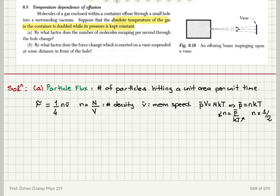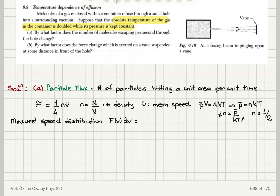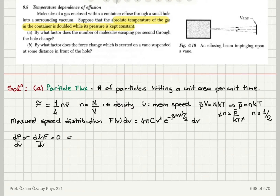On the other hand, we need to look at what happens to v̄. In the Maxwell speed distribution, there are three important speeds. The distribution f(v)dv gives the number of molecules with speeds in the range v to v+dv per unit volume, and has the form 4π·C·v²·e^(−βmv²/2)dv. By taking the derivative of ln(f) with respect to v and setting it to zero, the most probable speed is √(2kT/m).